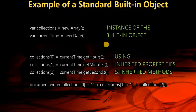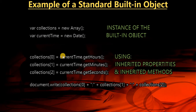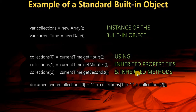For example, Array and Date are built-in objects. To use them, you declare a variable — say 'collection' — and set it equal to 'new Array'. Now 'collection' is an instance of Array and inherits its properties and methods. Similarly, 'currentTime' is an instance of Date. You can then call built-in methods like getSeconds, which are built-in behaviors inside the Date object, and get a usable result.